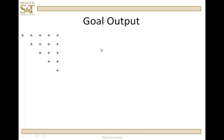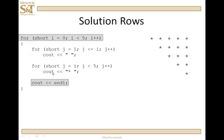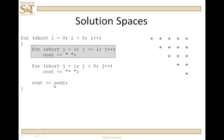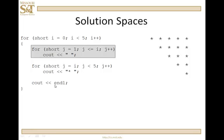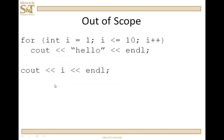Now there's a new pattern — very similar, except there are spaces before the stars. I need an outer loop for the number of rows, an inner loop for the number of spaces — zero on the first line, one on the second, two on the third, and so on — and then another for loop to generate the number of stars after the spaces. So: the outer loop and endl handle the rows, the first inner loop outputs spaces, and the second inner loop outputs stars.